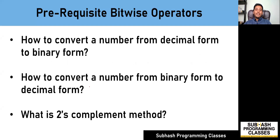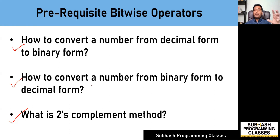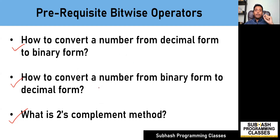Before understanding bitwise operators, it is very necessary that you must understand a few concepts: how to convert a number from decimal form to binary form, how to convert a number from binary form to decimal form, and what is two's complement method. If you feel you have no idea about these concepts, it is highly recommendable that you go and watch my video on basics of digital electronics, where I have clearly explained one's complement method, two's complement method, and number conversions. The link for that video is given in the description box below. Go watch that video and then come back and proceed with this lesson.